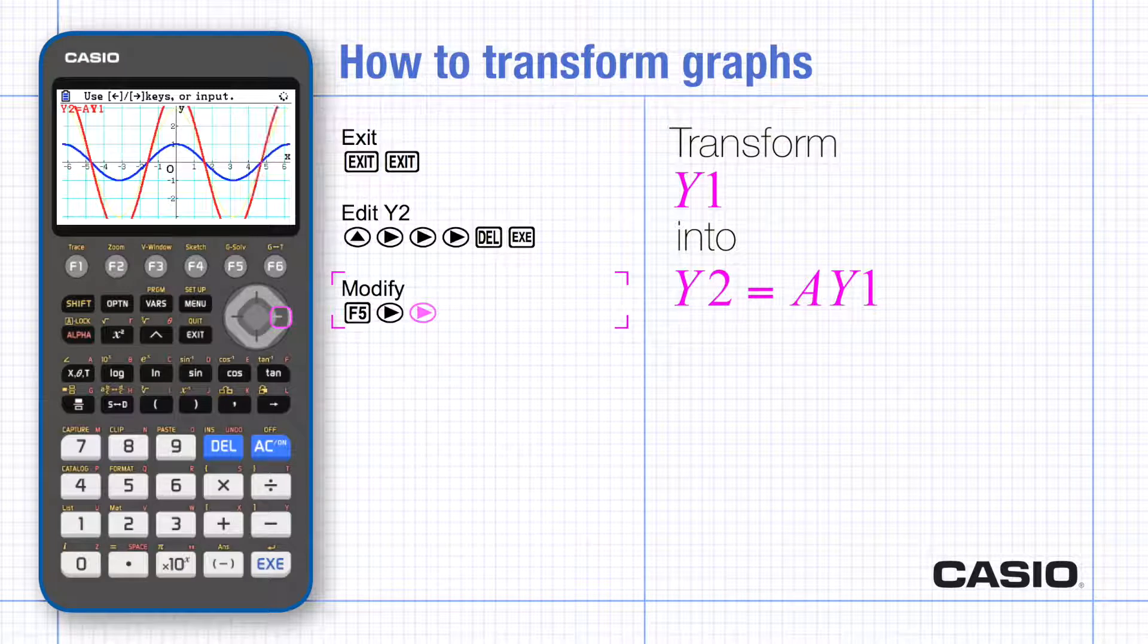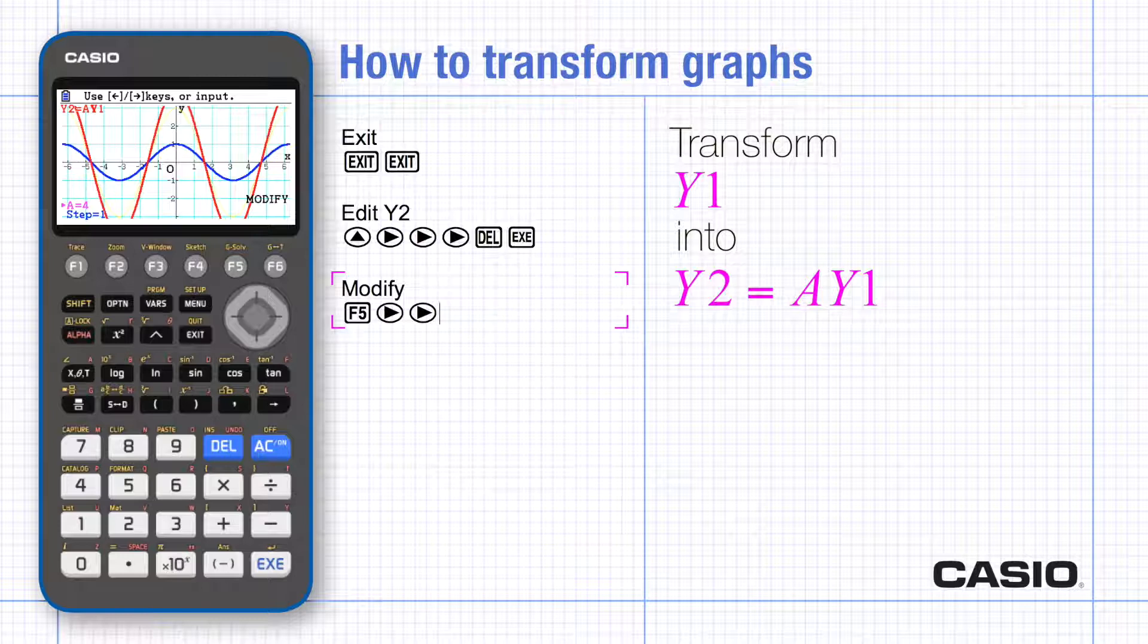You can't adjust the axis while it's still in modify so to do so exit graph mode and now zoom and view window will be active.